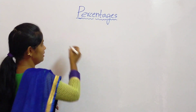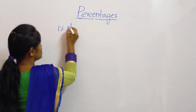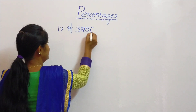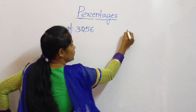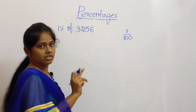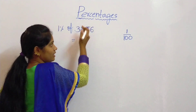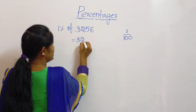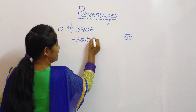Let us consider an example: 1 percentage of 3256. Here 1 percentage means 1 by 100. Since 100 has 2 zeros, after 2 digits from the right side we have to put the decimal. So 1 percentage of 3256 becomes 32.56.